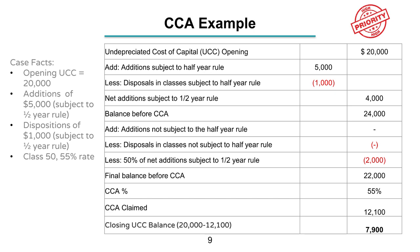Now let's go through the example using that CCA template. We pretend our UCC opening balance was $20,000. In the year, you bought something for $5,000 and sold something for $1,000 — both subjected to the half-year rule. This is class 50 with a rate of 55%. Starting with the $20,000 UCC balance, you add the net additions of $4,000 ($5,000 minus $1,000), giving a balance before CCA of $24,000. Then minus 50% of the $4,000 net additions, leaving a final balance before CCA of $22,000. Multiplying by 55% gives a CCA claim of $12,100, and a closing UCC balance of $7,900.